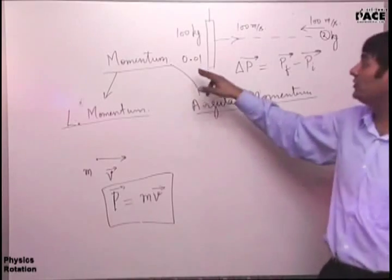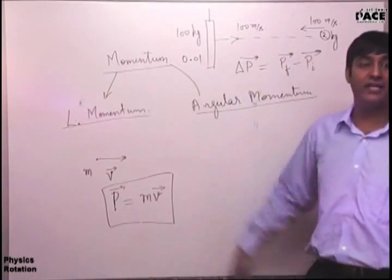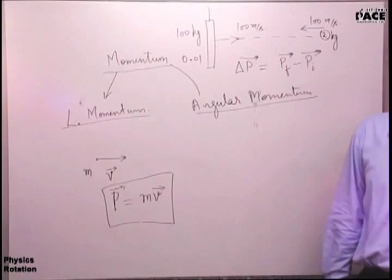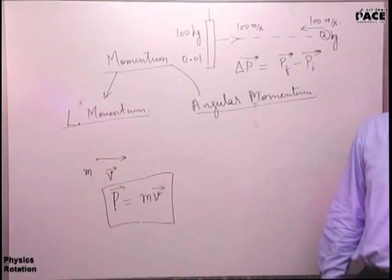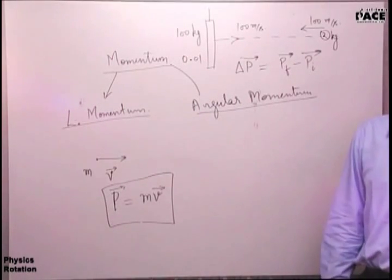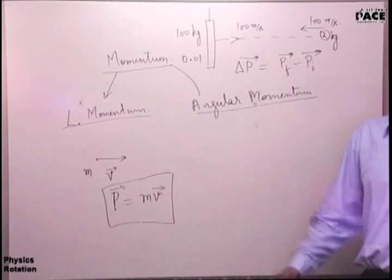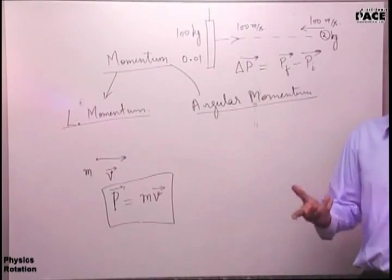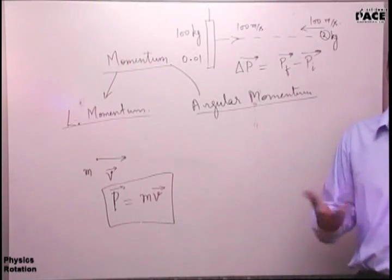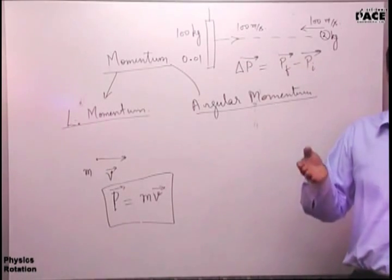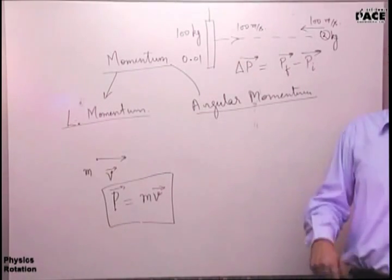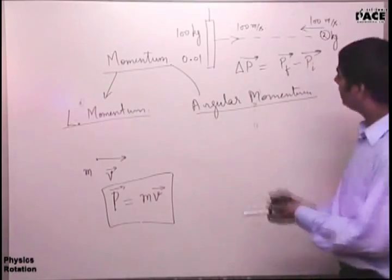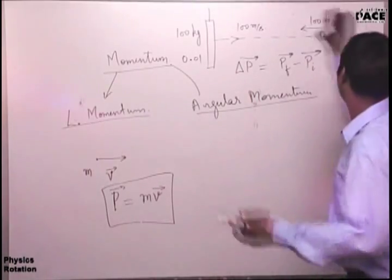If the collision took 0.01 seconds, what was the force which the bat exerted on the ball? It is 4 × 10⁴ N - you find the rate of change of momentum of the ball, that gives the force. What was the force that the ball exerted on the bat? In the opposite direction. Very good. This will be your base building.